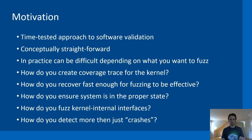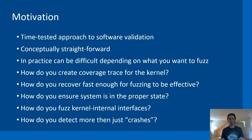Why we are looking into VM forking for fuzzing: fuzzing is a time-tested approach to software validation. It's conceptually straightforward — you generate random inputs to your target code and see if anything bad happens to it. In practice, this can be quite difficult depending on what you want to fuzz. If you talk about fuzzing the kernel, you have to answer how you get coverage tracing information, how you recover your system fast enough, and how you ensure the system is in the proper state between fuzzing iterations. Ideally you want to start from the same starting point, otherwise bugs may not be reproducible.